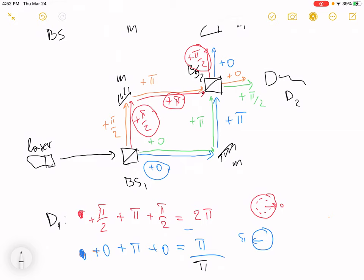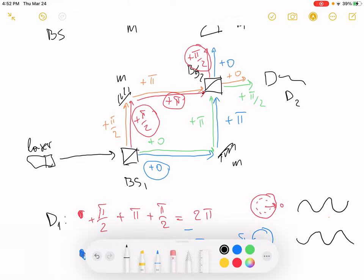When there's π relative difference means that the waves come exactly in the opposite fashion. That means we will see a destructive interference there. So we expect no photons to be seen in detector one.